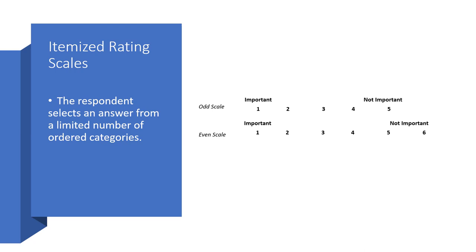We have two different kinds of scales: odd scales versus even scales. With odd scales, respondents can choose a neutral position, but with even scales they have to take a position — they have to choose either three or four. If you choose four, you are leaning more towards non-important, but if you choose three, you kind of lean towards more important.